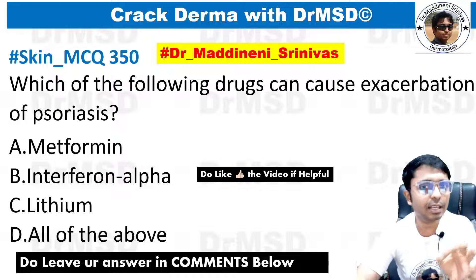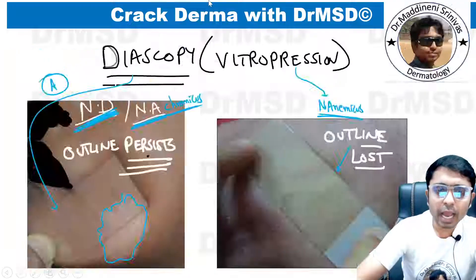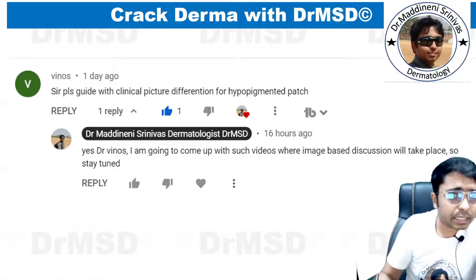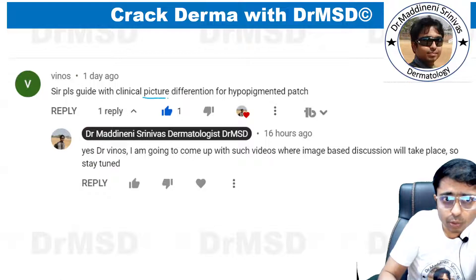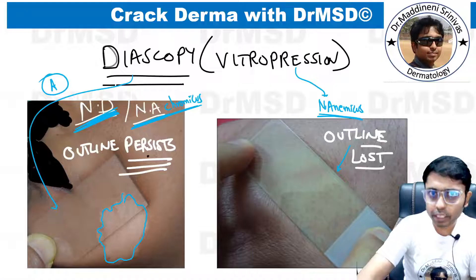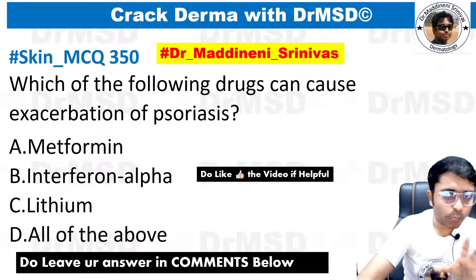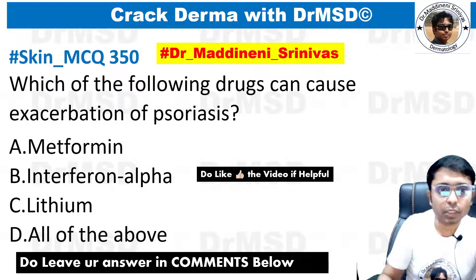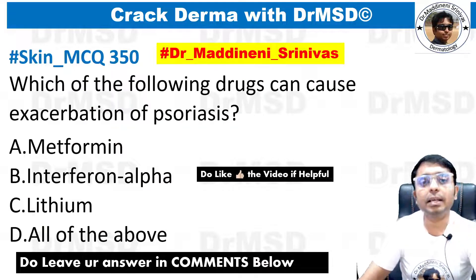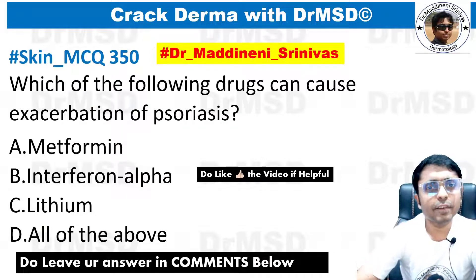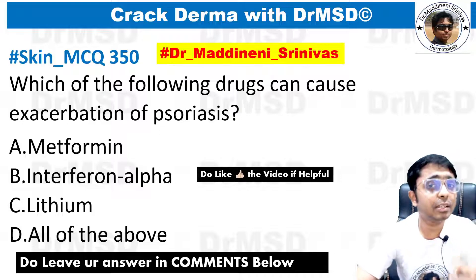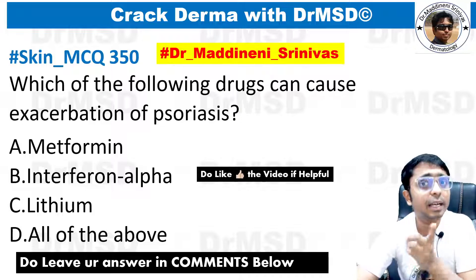I hope this explanation was helpful and you understood the differences between Nevus Depigmentosis and Nevus Anemicus. Please give a thumbs up so I know this kind of explanation is helpful. A student requested pictures when discussing clinical cases, so I've added images and explained as simply as possible. This is tomorrow's MCQ — if you know the answer, comment below; if your answer is right, I will heart it and feature it in the next video.